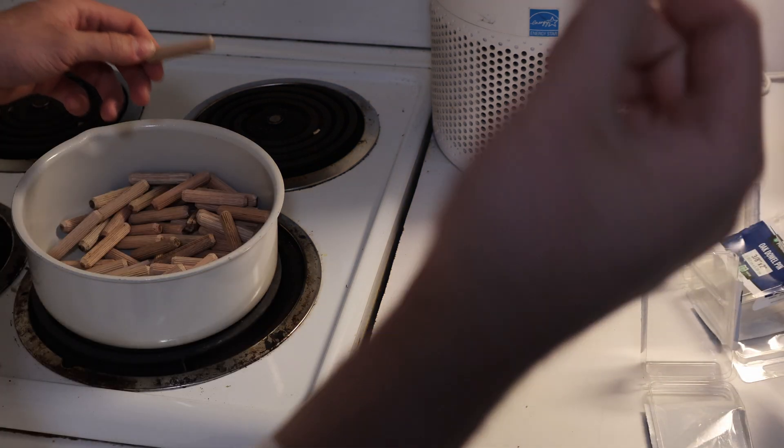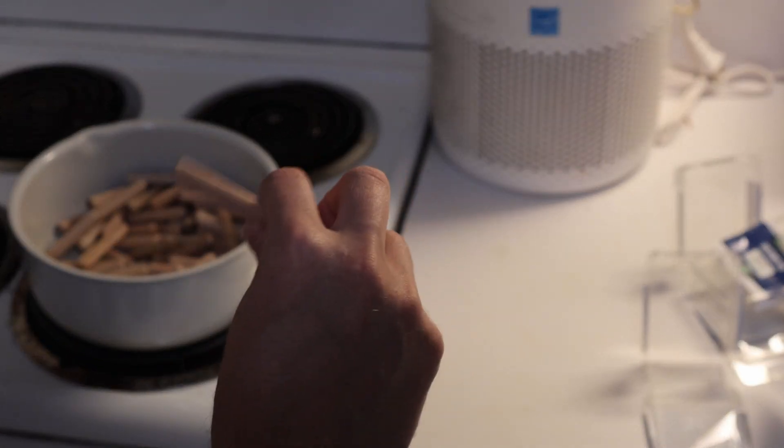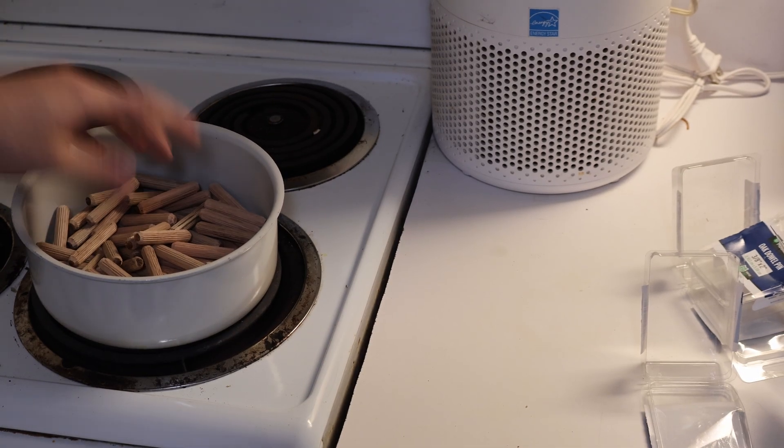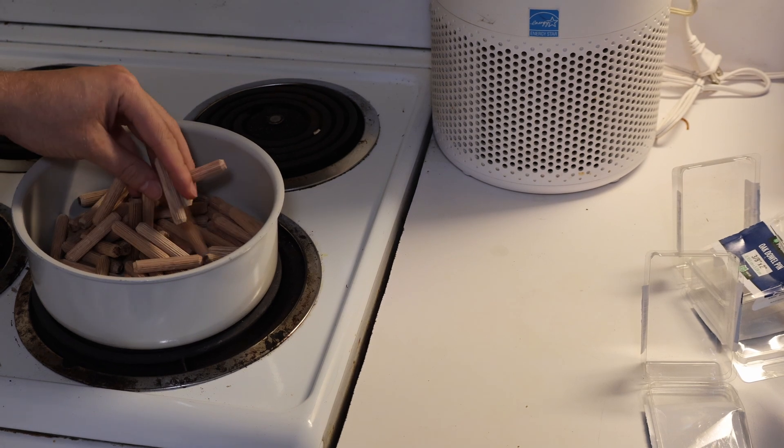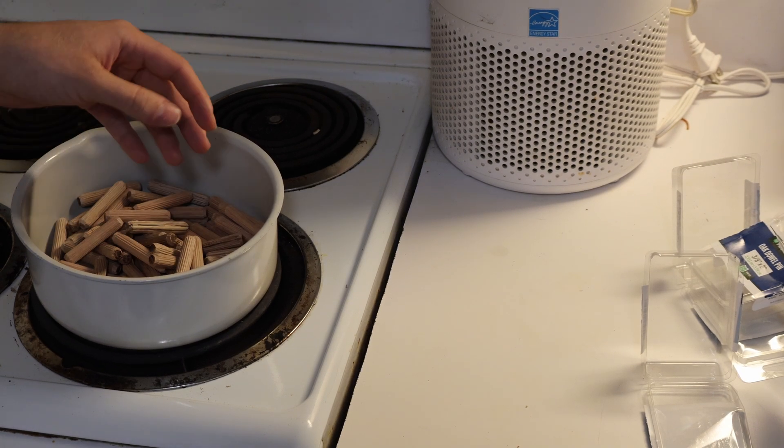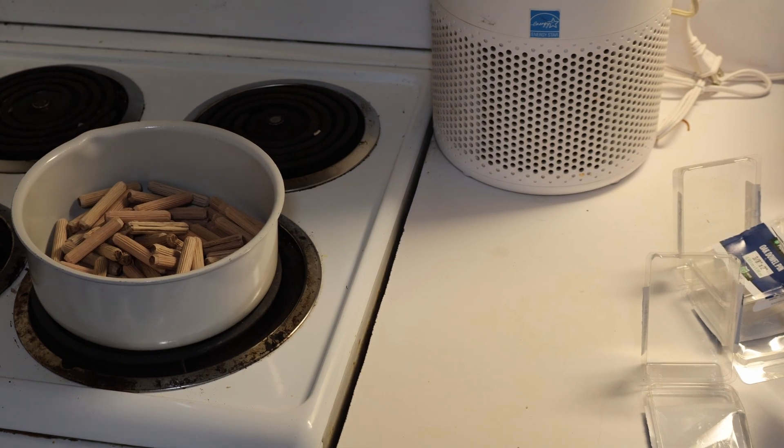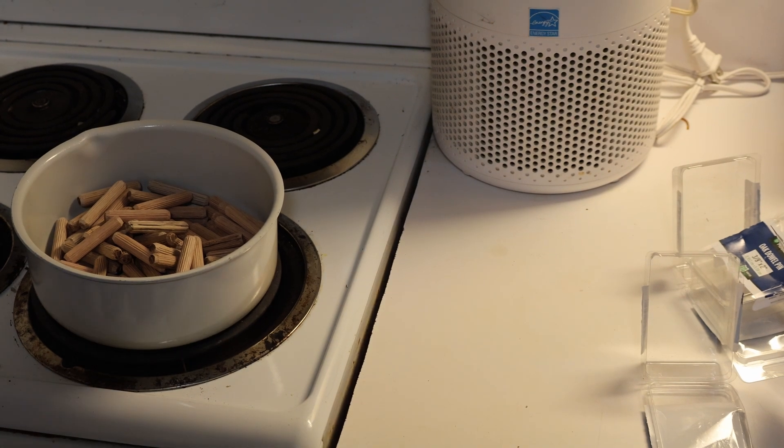These are all 3/8 inch 2-inch dowel pins. You could just cut your own dowels. You'll need about 50 to 100 for a single log. So realistically this is only about one log's worth so we'll probably just be doing shiitake to start. But let's go ahead and cover this all in water and get it boiling.